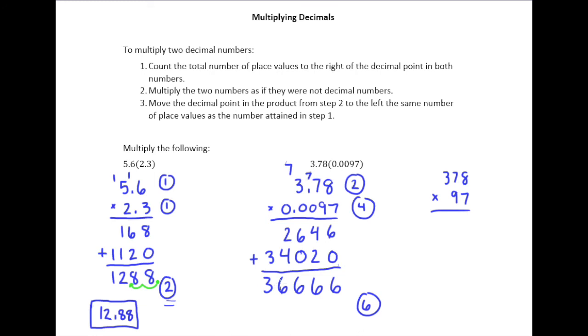But we understand that we need to send that decimal point back 6 places. So this is 1, 2, 3, 4, 5, and then we have one more, 6. And remember, if you ever jump an empty space, you need to put a 0 there. And also, if you have a decimal point on the far left of your number, you should put a 0 in front of it. So what we end up with here is the answer of 0.036666.